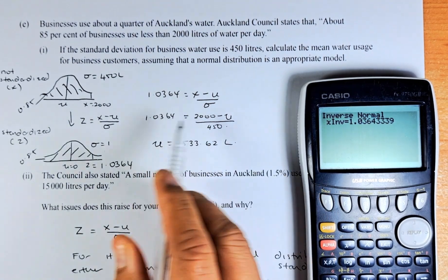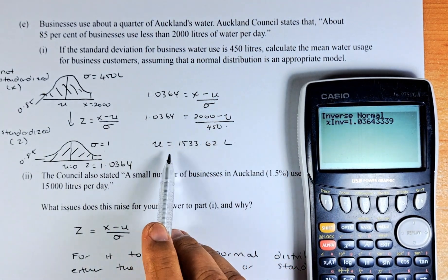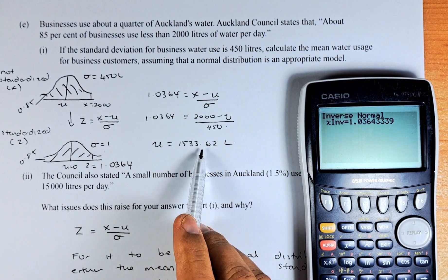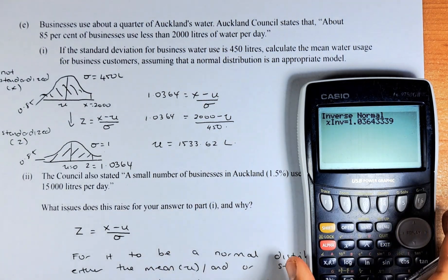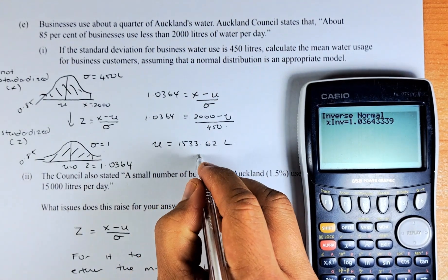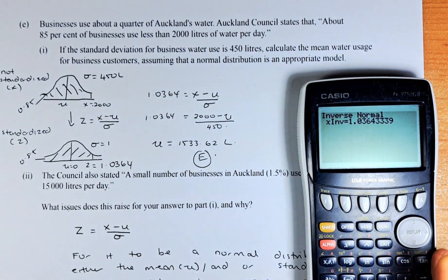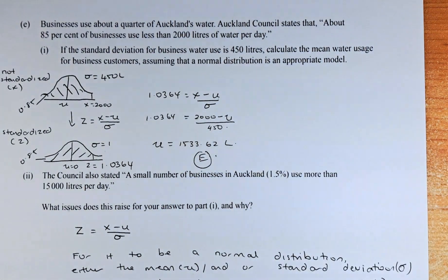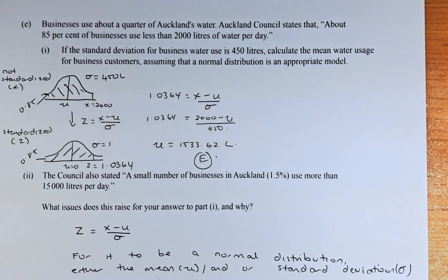So you need to be able to use the algebra to solve this to get 1,533.62 litres and that will give you an excellence. This will be excellence. And then we are going to do the second part. I'm taking off the calculator and we'll do the second part now.